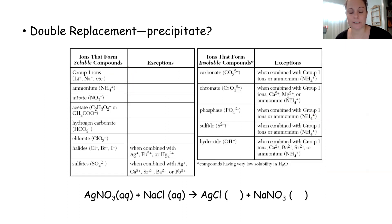In double replacement reactions, you have to know whether or not a precipitate will be formed. So if a precipitate is not formed or a gas is not formed or water is not formed, then a double replacement reaction will not occur. I know that the reaction at the bottom of your screen here will occur because one of these products is going to form a solid or a precipitate. So let's look at AgCl.